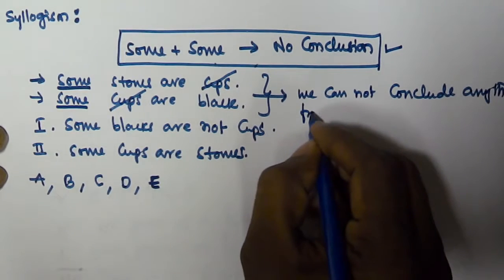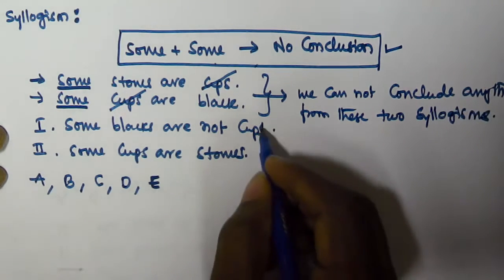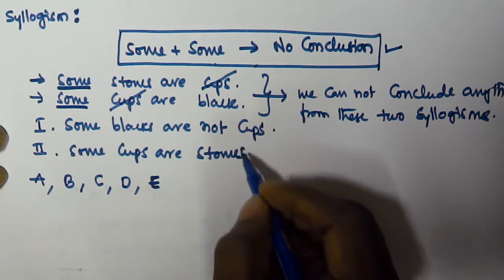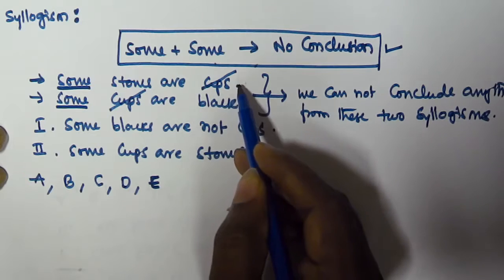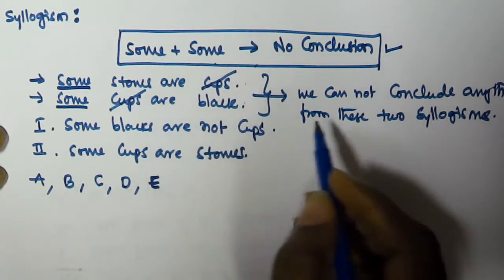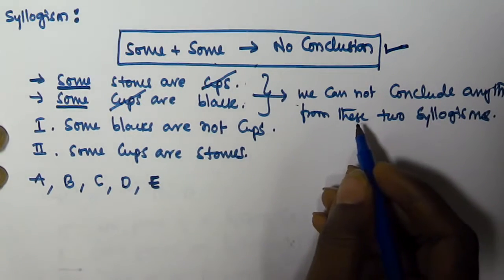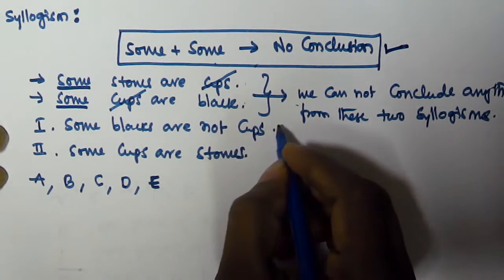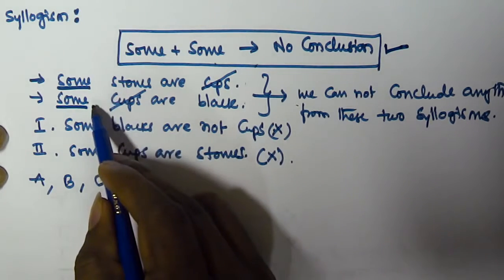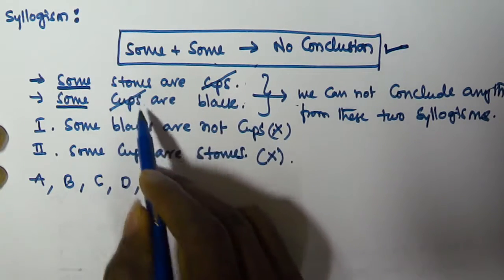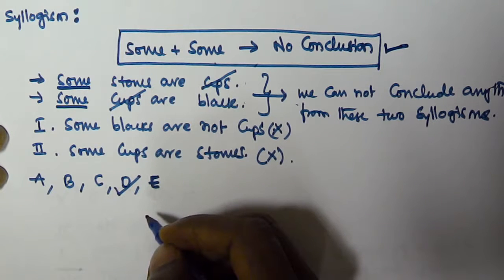We cannot conclude anything from these two syllogisms because they are starting with 'some' and 'some,' and the predicate of the first one is equivalent to the subject of the second syllogism. So the two given conclusions are going to be false only. Whenever you see 'some' and 'some' with the predicate of the first equivalent to the subject of the second, directly select option D, because both conclusions are always going to be false.